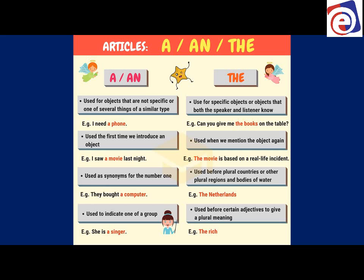'A' and 'an' are used for objects that are not specific, or one of several things of a similar type. 'I need a phone' means any phone, whereas 'I need the phone' means a specific phone. We use 'a' or 'an' the first time we introduce an object — many ESL speakers make the mistake of using 'the' too early. After mentioning it once, we can then use 'the.' We also use 'a' as a synonym for the number one: 'they bought a computer' — one computer. It can also indicate one of a group: 'she is a singer,' 'he is a football player.'